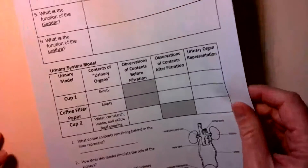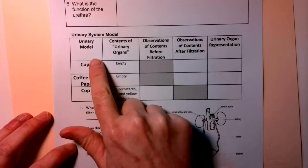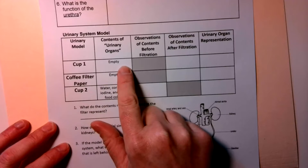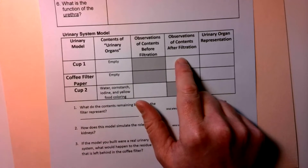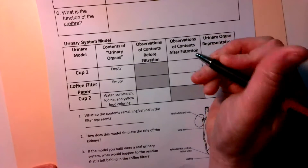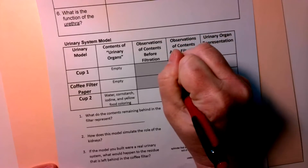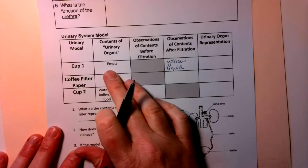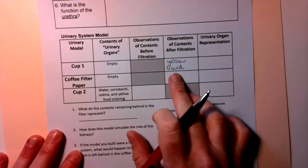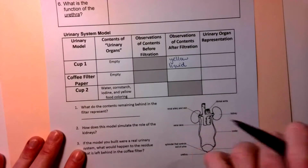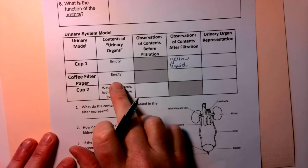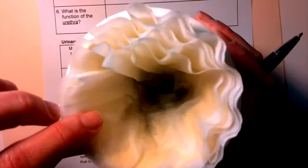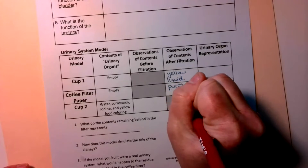Taking a look back at your worksheet — the urinary model. For cup one, it was empty at the start — that was my beaker. Observations of the contents after filtration: there is yellow liquid in the beaker. We'll figure out which urinary organ each cup represents. Cup one started empty; now it's full of yellow liquid — that's the urine. Think about where urine is kept until we expel it. The coffee filter paper: before it was empty; after, it has that purplish residue in it — purple residue.